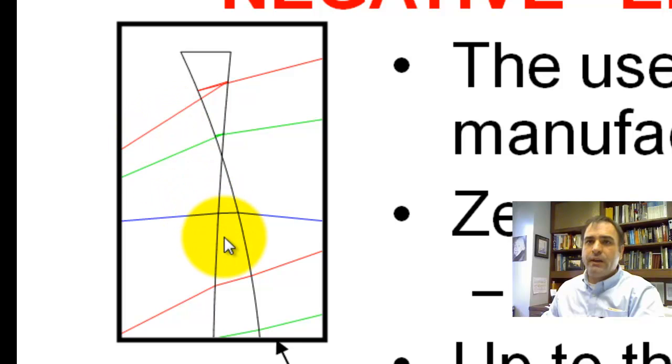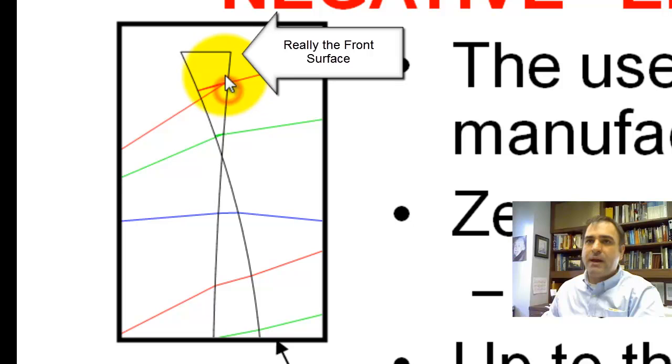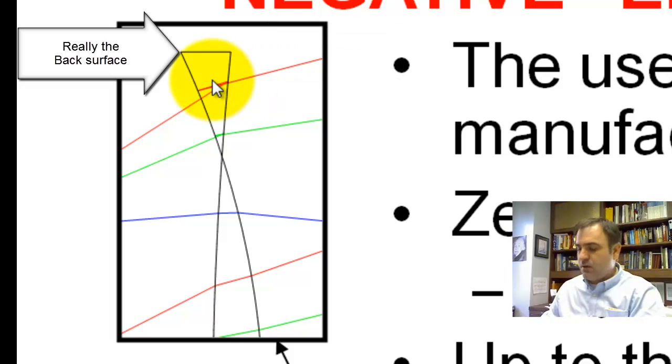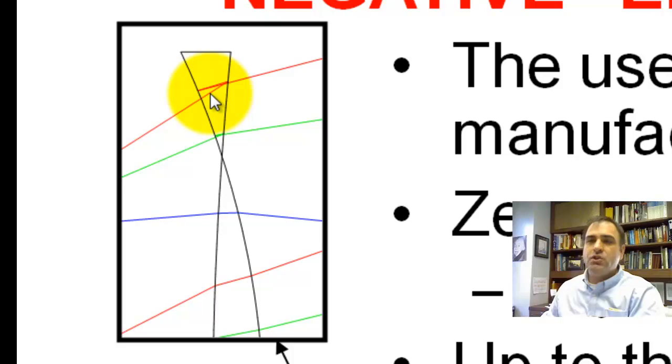The ray comes along, it hits surface one, which is this one here. Up here, it's here. And then it progresses through the thickness, which is going negative, and then it refracts on this back surface. And ZMAX will go along its merry way. It's up to the user to check for these realistic, unrealistic geometries.